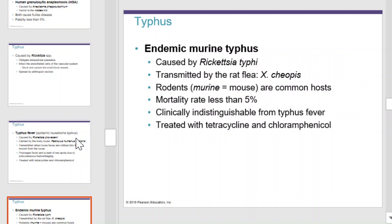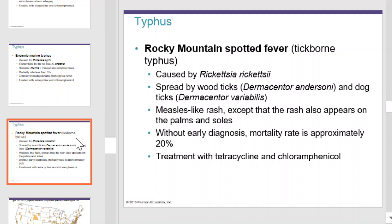Endemic murine typhus is caused by Rickettsia typhi. It's transmitted by the rat flea. Rodents are the common host, and it has a mortality of less than 5%. It's clinically indistinguishable from typhus fever and can be treated with tetracycline. Rocky Mountain spotted fever is tick-borne typhus carried by Rickettsia rickettsii and spread by wood ticks and dog ticks. It causes a measle-like rash except that the rash also appears on the palms and soles of your feet. Without early diagnosis, it has a mortality rate of approximately 20%, and again it can be treated with tetracycline.